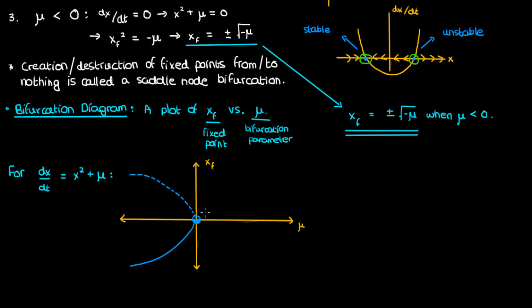So this is our bifurcation diagram. For positive μ there are no fixed points, but as we move left we get a half-stable fixed point when μ = 0 at x_f = 0. This half-stable fixed point then separates into an unstable branch and a stable branch of fixed points when μ becomes negative. This bifurcation diagram effectively explains the behavior of a dynamical system where bifurcations arise.